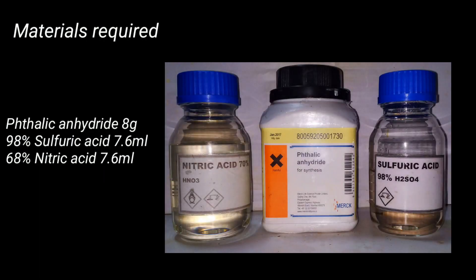Materials required for this preparation includes 8 grams of phthalic anhydride, 7.6 milliliters each of 98% sulfuric acid and 68% nitric acid.